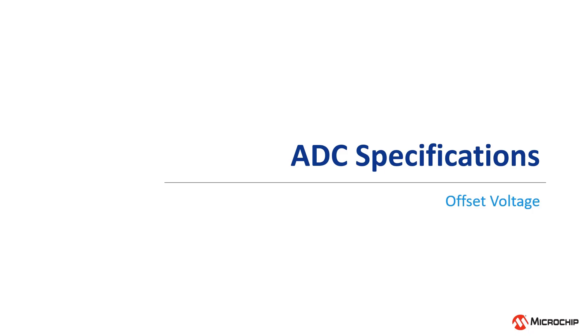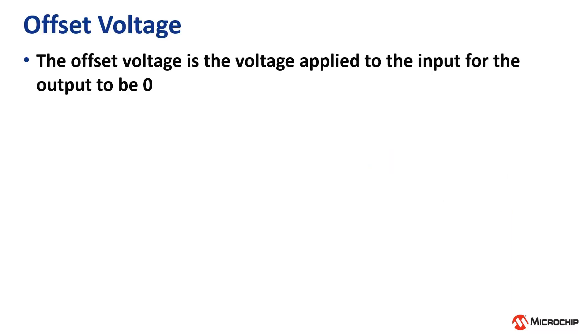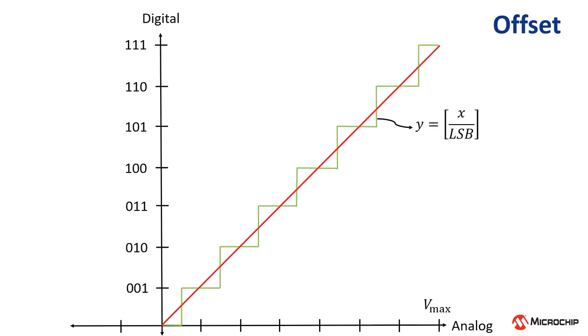In this video, we'll continue our series on ADC specifications by reviewing offset voltage. The offset voltage is the voltage applied to the input for the output to be zero. What does this really mean for the ADC?